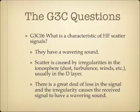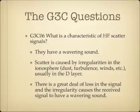What is a characteristic of HF scatter signals? One characteristic is they have a wavering sound. Scatter is caused by irregularities in the ionosphere — like dust, turbulence, and winds — usually in the D layer. There is a great deal of signal loss, and the irregularity causes the received signal to have a wavering sound.